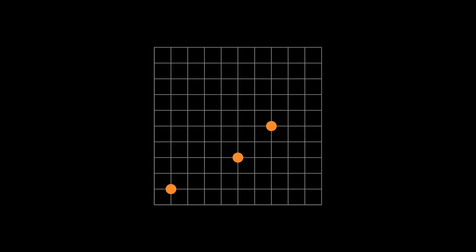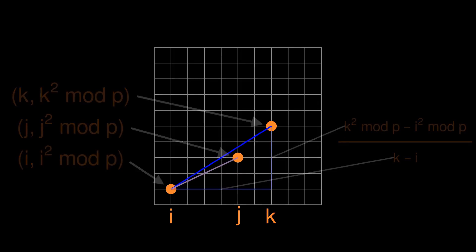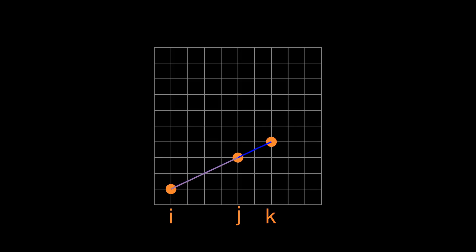How do we know that this method always works? Take any three distinct points on y equals x squared mod p within our grid. Let's call the x coordinates of the points i, j, and k in increasing order, so that the full coordinates of these points are (i, i squared mod p), (j, j squared mod p), and (k, k squared mod p). The slope of the line between the first and second points is just the change in y, j squared mod p minus i squared mod p, over the change in x, j minus i. Do the same for the slope between the first and third points. If these three points are on the same line, these slopes must be equal.